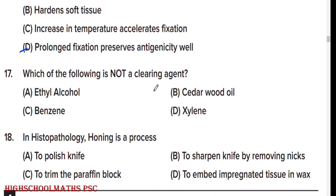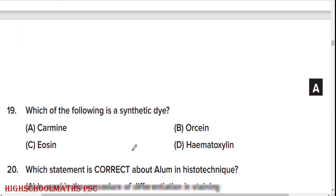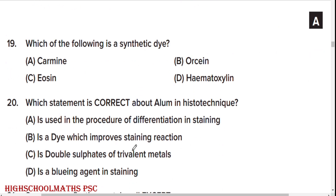Which of the following is not a clearing agent? Alcohol. In histopathology, honing is a process — option D, the right answer — to sharpen a knife by removing nicks.